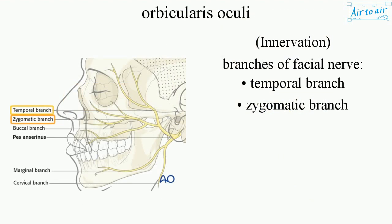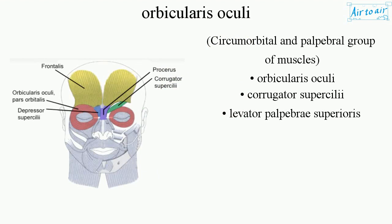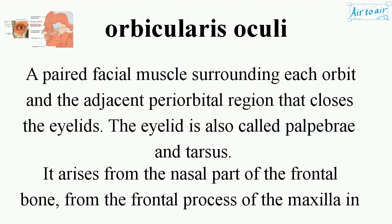Innervation: branches of the facial nerve — temporal branch and zygomatic branch. Circumorbital and palpebral group of muscles includes: orbicularis oculi, corrugator supercilii, levator palpebrae superioris.